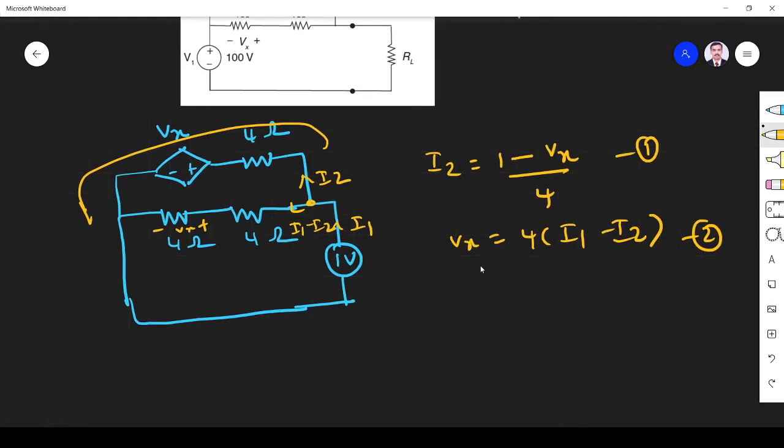Now what we have to do. So from this what I understand is I2 is equal to Vx by 4. Minus I1 minus. So it is minus Vx by 4 plus I1. So if we simplify.